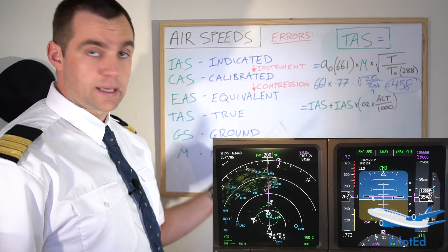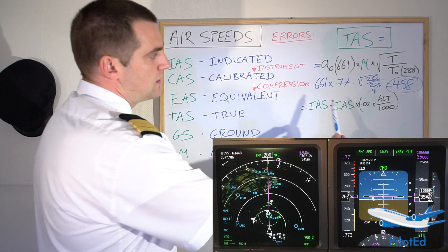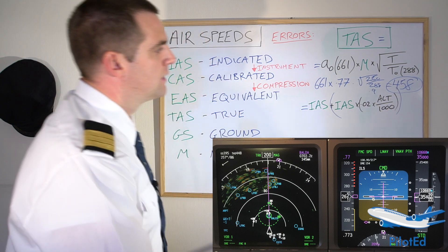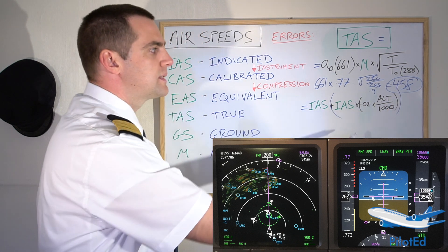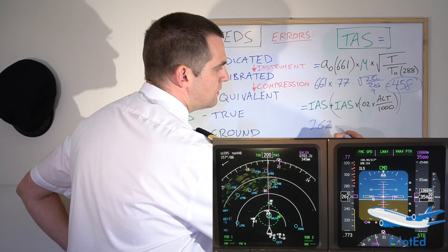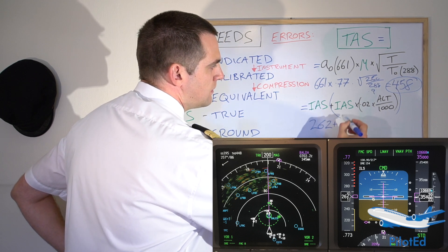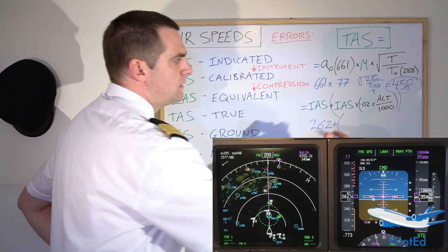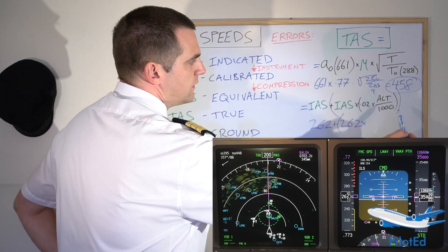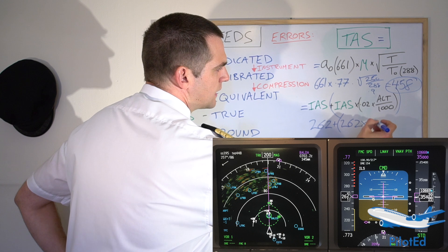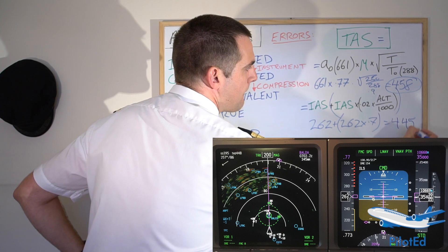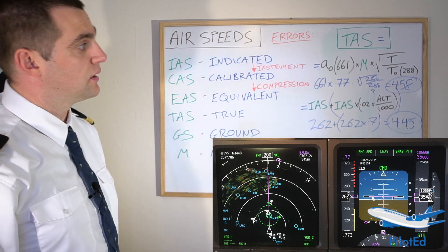The next approximation: TAS equals indicated airspeed plus indicated airspeed times 2% for every 1,000 feet climbed. So in this case, 262 plus (262 × 0.02 × 35) — that's 262 plus about 183 — which equals approximately 445. That one actually gets us a little bit closer to 448.